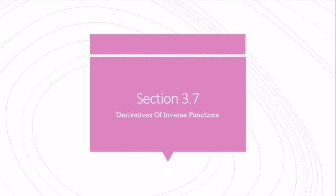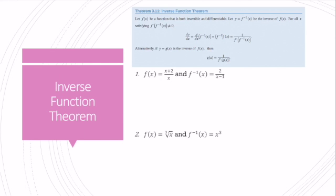Section 3.7 talks about the derivative of inverse functions. Let f of x be a function that's invertible and differentiable — a one-to-one function — and f inverse of x be the inverse of f of x. The derivative of f inverse follows the rule: 1 over f prime of f inverse of x.